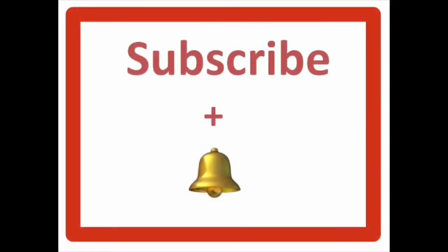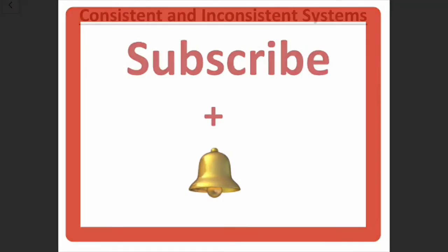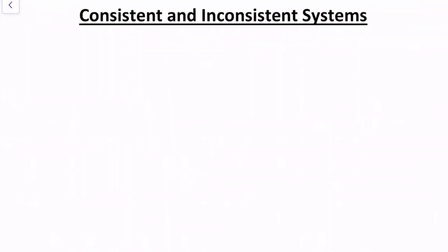Hi guys, if you find this video helpful please like, subscribe, and press the bell icon for notifications. Today our topic is consistent and inconsistent systems when a matrix equation is involved — that is, when Ax = b.